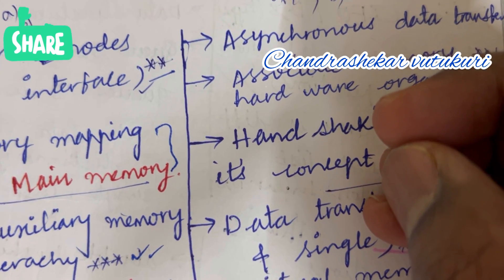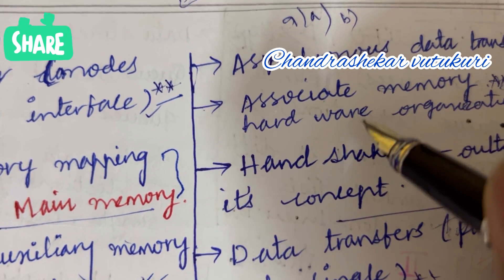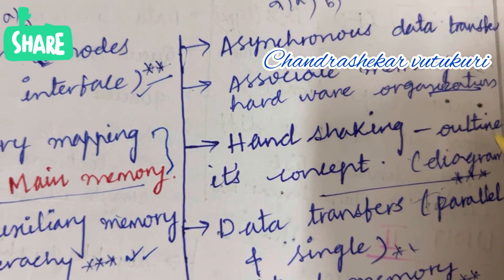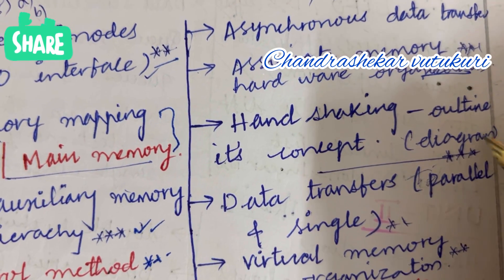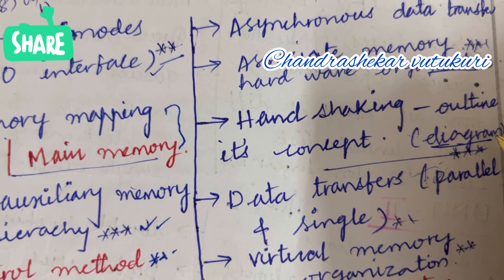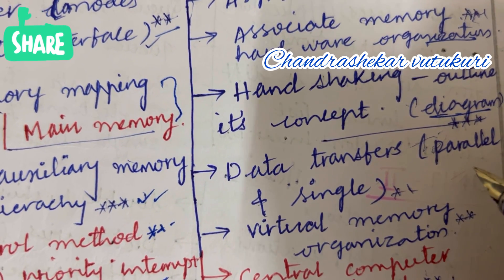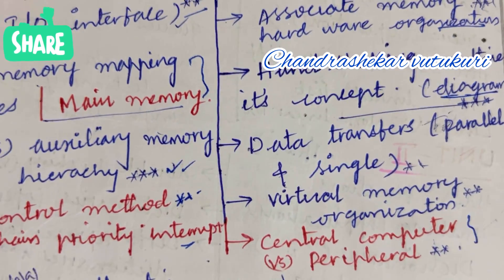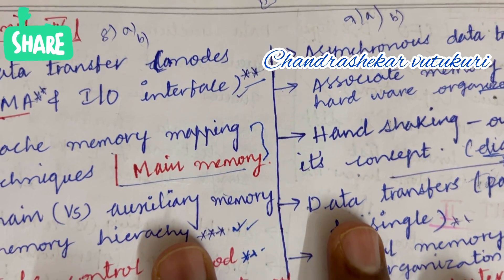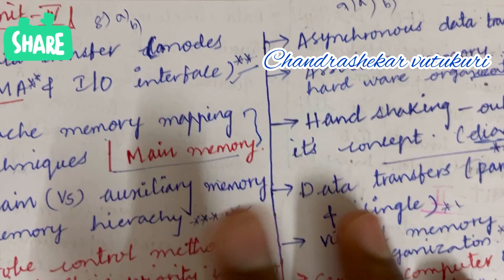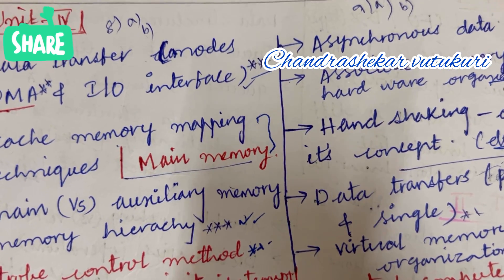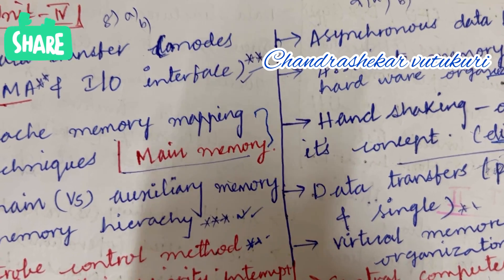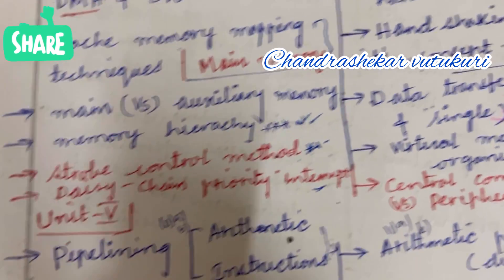For 9AB: asynchronous data transfer, associative memory hardware organization is set as the topmost question. Handshaking along with its outline, concept, and diagrams — do not forget your stationery to the examination. Data transfer parallel and serial, virtual memory organization, and central computer versus peripheral may be the short question this time. These are the questions under Unit 4 of 8AB as well as 9AB — be thorough with all these concepts.